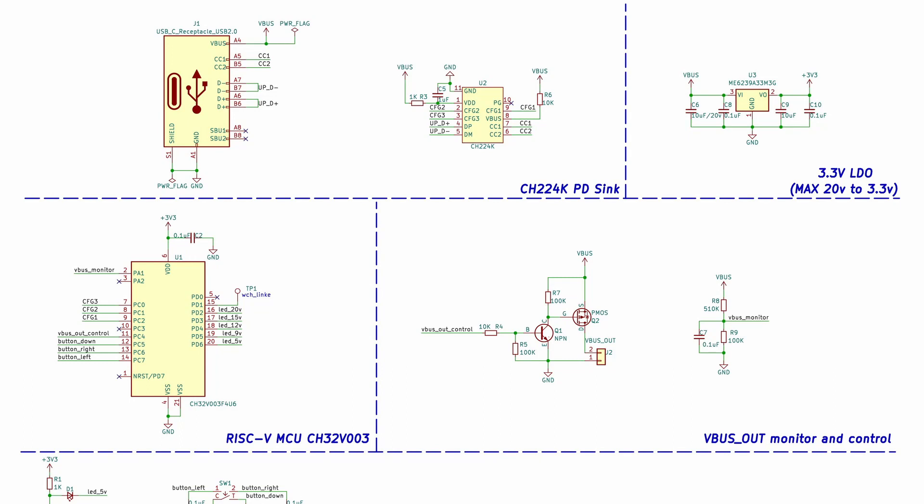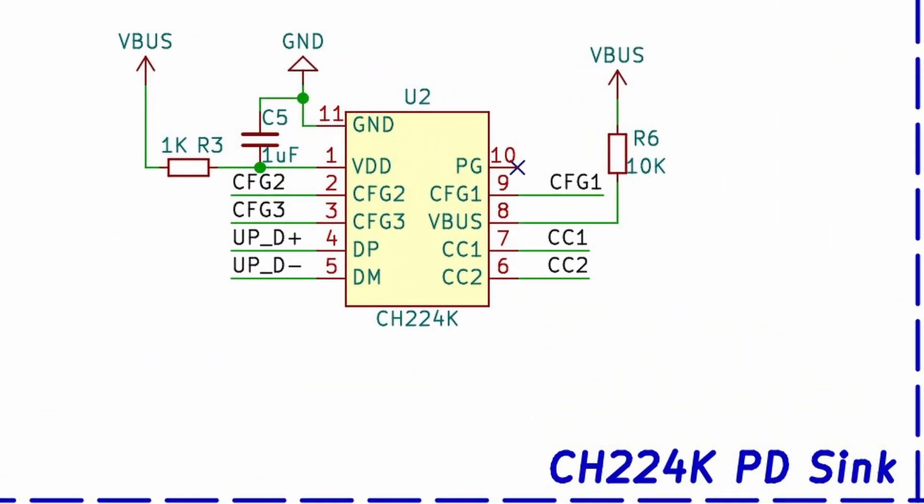Looking at the schematic, the first thing is we have the CH224 PD, and we're going to use its config pins — config 1, 2, and 3. With these three pins, we set up a 3-bit register, which means we can have up to eight instruction sets for changing the mode. For example, 5 volts can be 0-0-0, 9 volts can be 0-0-1, all the way up to 20 volts.